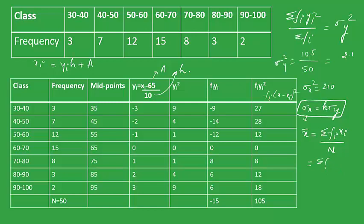Let's substitute this. We have fi into (yi h plus a) upon n. This particular term will give us h into sigma fi yi upon n, which will give us the value of the mean here. After we have calculated mean, we'll go on to write the formula for standard deviation.